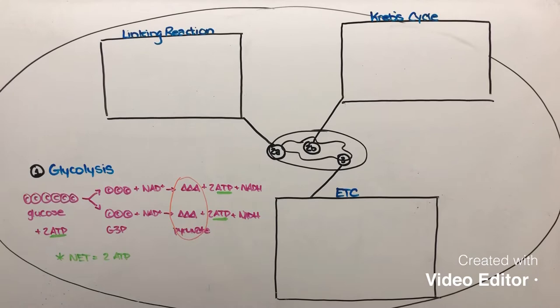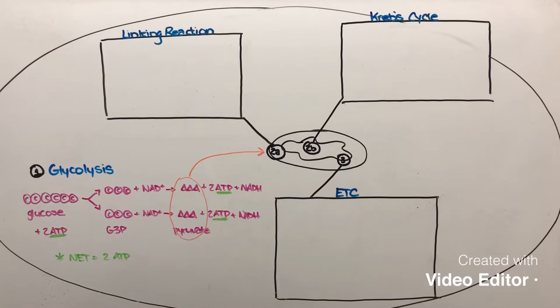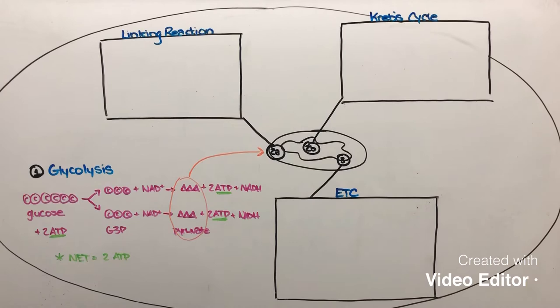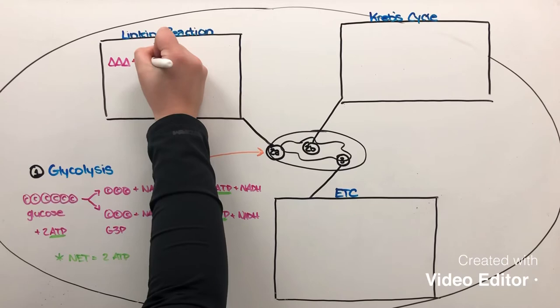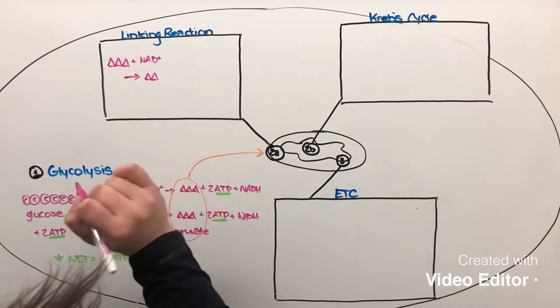Moving into the linking reaction, the pyruvates that were produced are now going to enter the intermembrane space of the mitochondria. Before they can enter the matrix and undergo the Krebs cycle, these pyruvates need to be modified into a molecule called acetyl coenzyme A. The main goal of the linking reaction is to take the pyruvate molecules made in step one and modify them to make acetyl coenzyme A. Each pyruvate molecule enters the intermembrane space and reacts with NAD+.